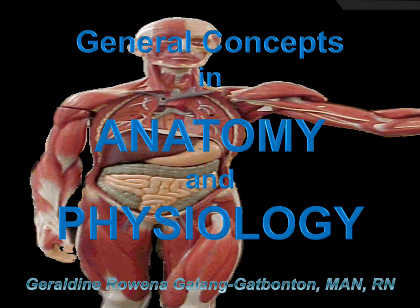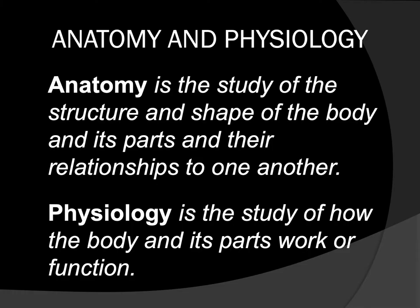To start our lessons, we begin with the general or basic concepts in anatomy and physiology. Anatomy is the study of the structure or the physical form of the body. There are two types of anatomy: gross anatomy and microscopic anatomy. Gross anatomy covers large body structures such as organs like the heart and the bones. Microscopic anatomy refers to structures too small to be seen by the naked eye, such as cells and tissues, which are only visible through a microscope.